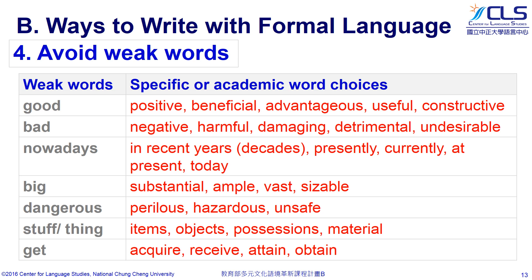Fourth, avoid weak words. Words like 'good,' 'bad,' 'nowadays,' and 'big' only convey vague ideas and are not specific enough. In academic writing, we should try to present specific ideas with more concrete images. Using words in the right column will help convey ideas more concretely. We can use 'positive' and 'beneficial' to replace 'good,' and 'substantial' and 'ample' instead of 'big.'